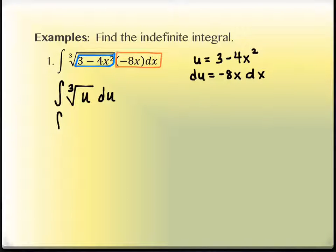I don't particularly like the notation for that, so I'm going to rewrite it as u^(1/3). What's the anti-derivative of u^(1/3)? We're going to add one to it so we get u^(4/3). Dividing by 4/3 is the same as multiplying by 3/4.